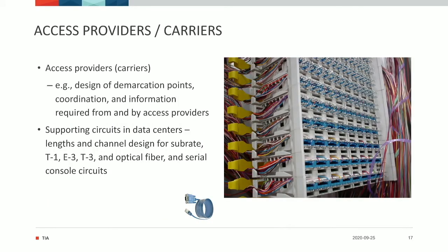There's a lot of supplemental information in the TIA-942 standard. There's a whole section on how to deal with your access providers or carriers, planning the demarcation points with them, coordinating them regarding the type of information they require, like the number of cabinets, how you should be terminating with them, and the type of cabling required. We also provide guidance regarding the length of circuits in data centers, such as T1, E3, and T3 type circuits. We have another section regarding the length of serial console cables in the data center.